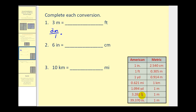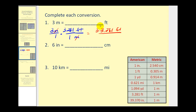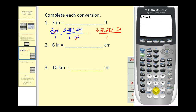We'll use this equation to write our unit fraction. Since we want meters to simplify out of our conversion, we'll write meters in the denominator and our numerator will be feet. The conversion is one meter is equal to three point two eight one feet. Notice when we multiply these fractions together, the meters simplify out, and we're left with three times three point two eight one feet divided by one. Let's go ahead and find this product on the calculator: three times three point two eight one. So three meters is approximately nine point eight four three feet.